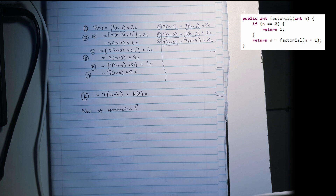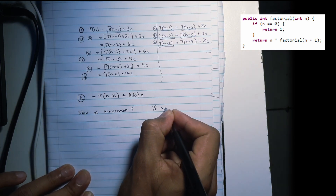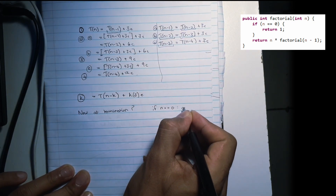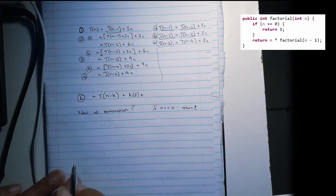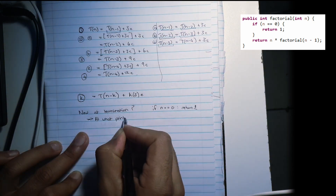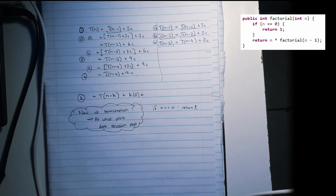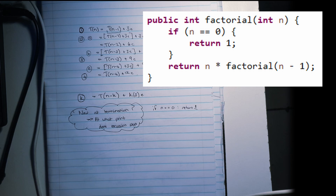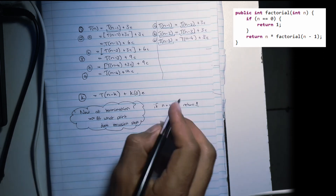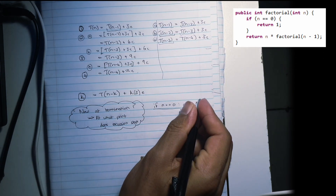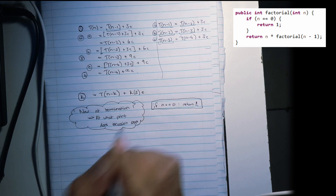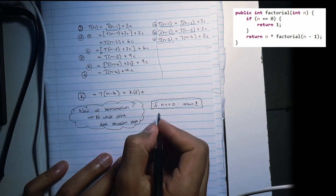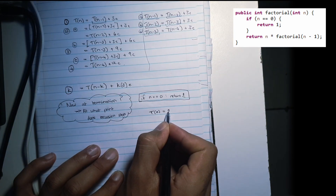We're going to look at the problem again. The termination condition for this one was: if N is equal to zero, return one. The termination condition means at what point do we stop calling our function recursively? We have if N equals zero, return one; otherwise we return N times factorial of N minus one. So T of zero equals one.